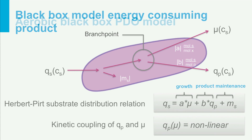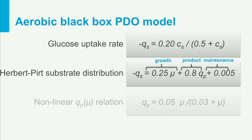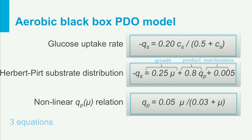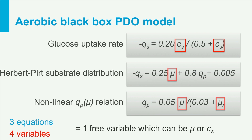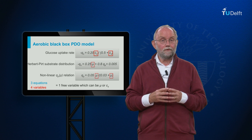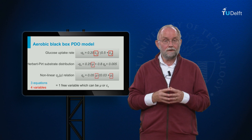Let us now construct a black box aerobic model for PDO. The glucose uptake rate Qs is a hyperbolic relation in Cs. The Herbert-Pert relation with its three terms is also given. And finally, we have a non-linear Qp-mu relation showing that Qp increases with mu in a non-linear fashion. By combining these equations, we have three equations and four variables — Cs, Qs, Qp, and mu — giving one free variable, which can be Cs, or practically mu, since we can manipulate mu in a chemostat.